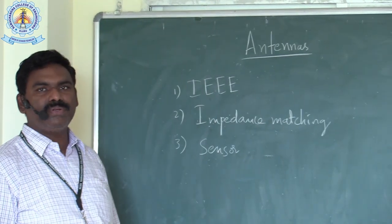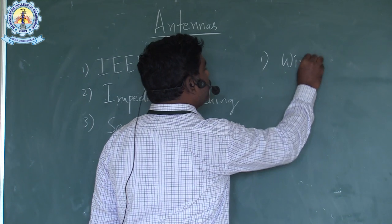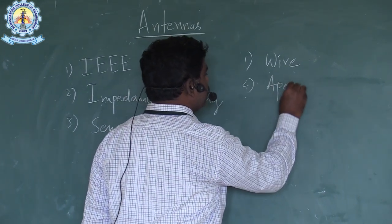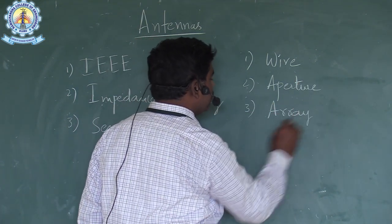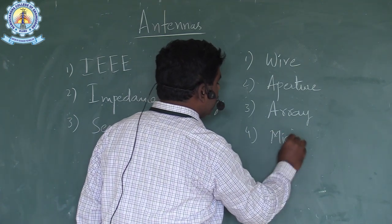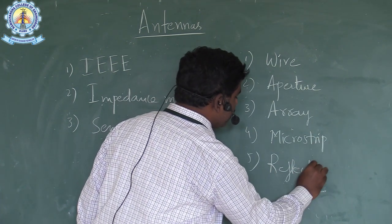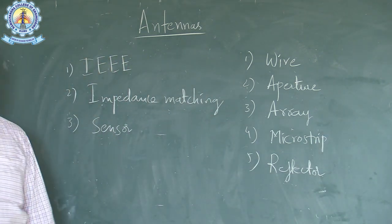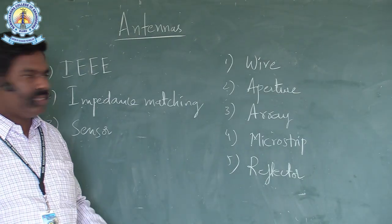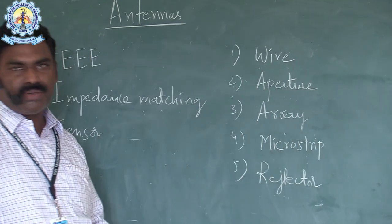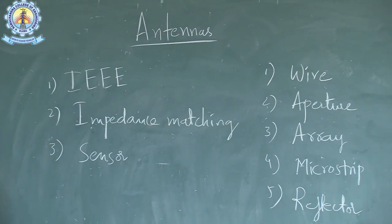Next, I am going to explain the different types of antennas. The first one is wire antenna, the second one is aperture antenna, the third one is array antenna, the fourth one is microstrip antenna, and the fifth one is reflector antenna.